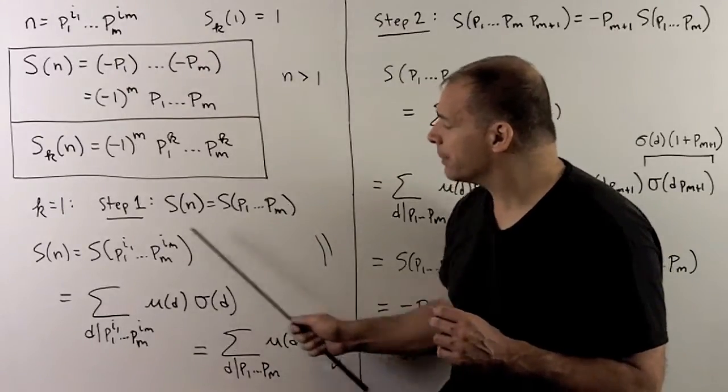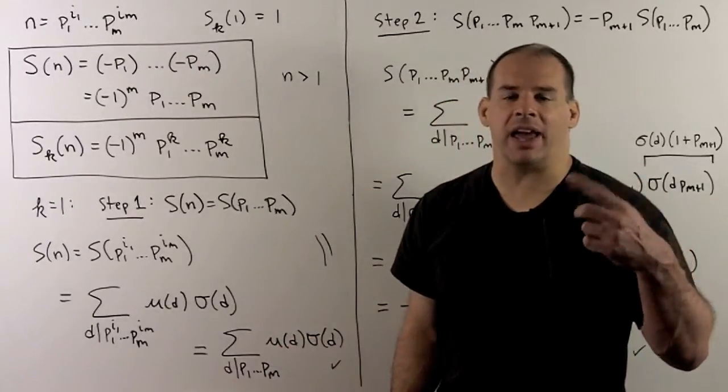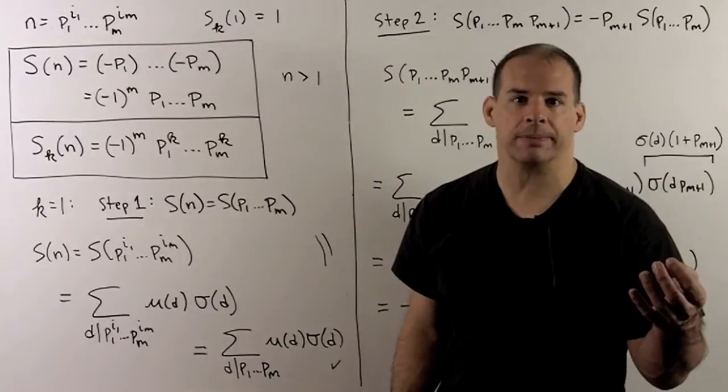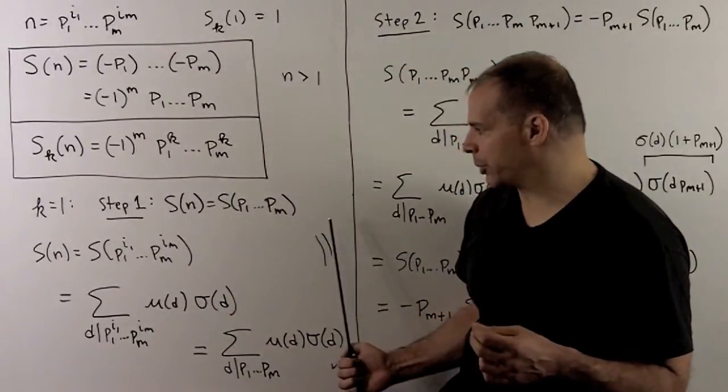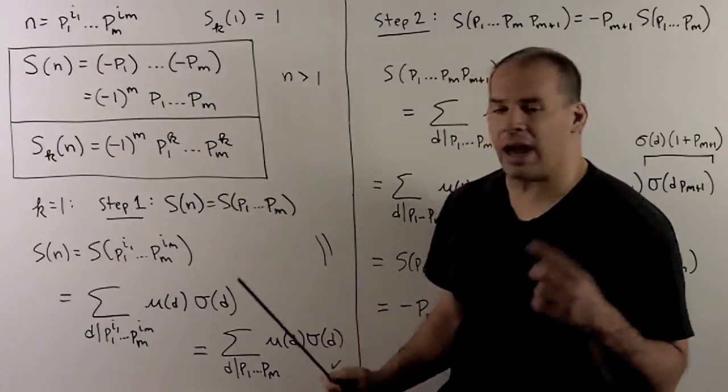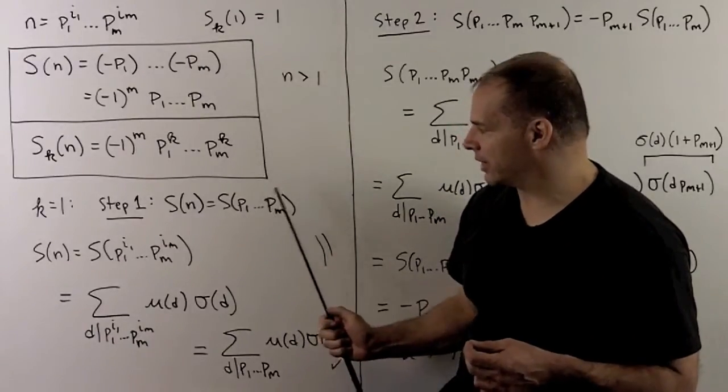With that, all we're considering now is S of p1 through pn. So the point here is mu is going to take out any higher powers of the primes. So our first step, we can strip out the exponents. Now all I have to do is calculate this thing here.